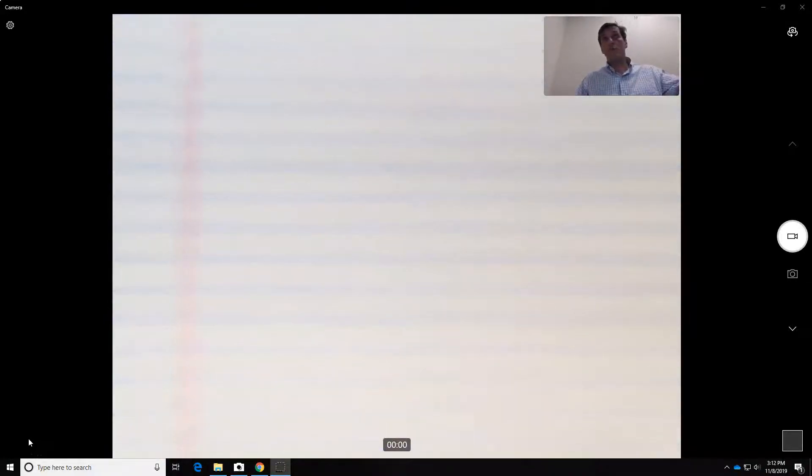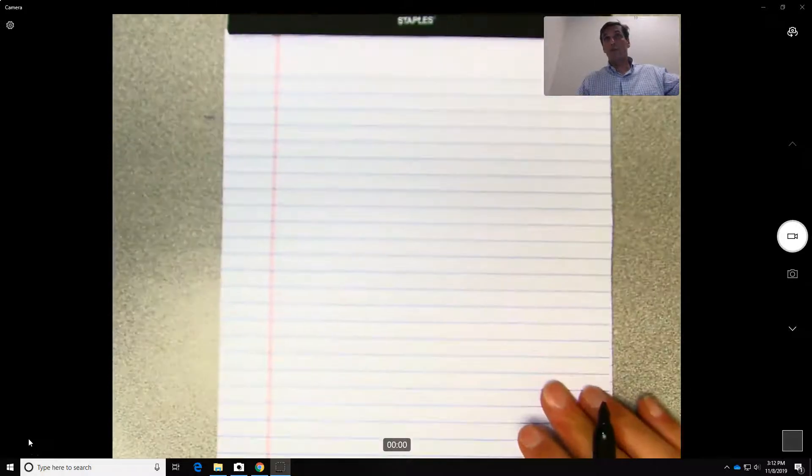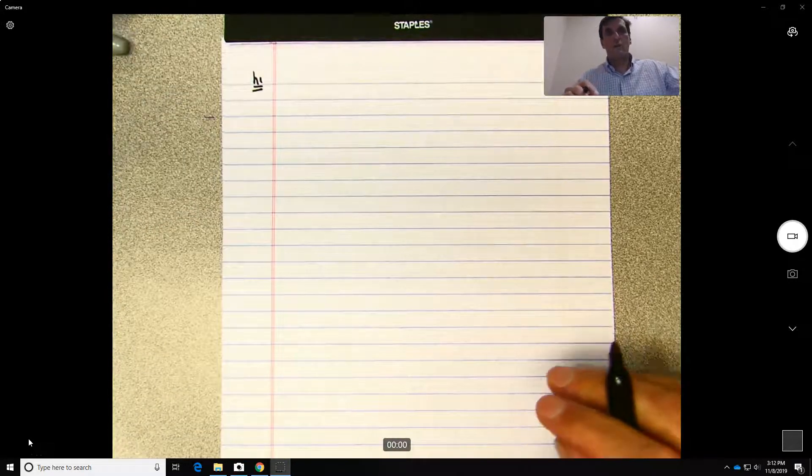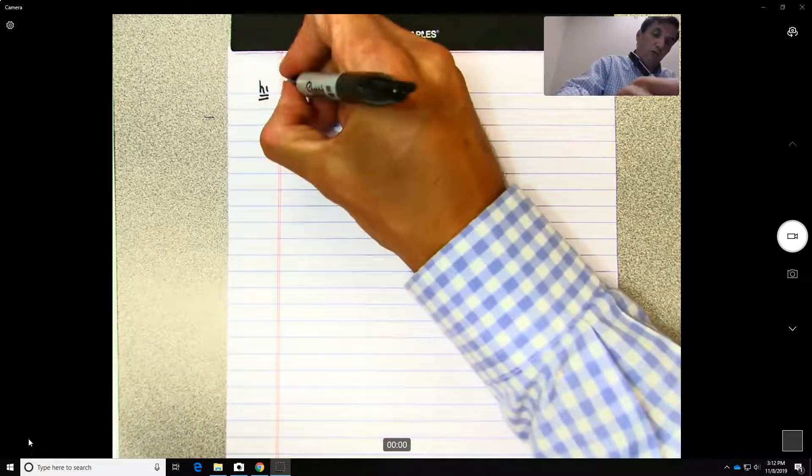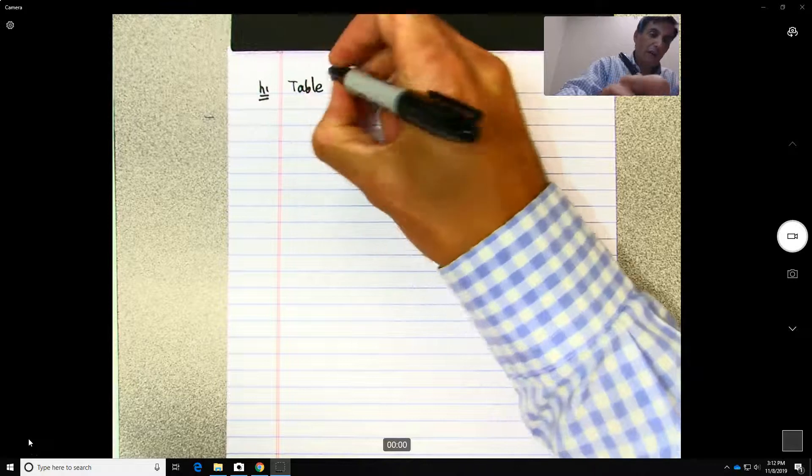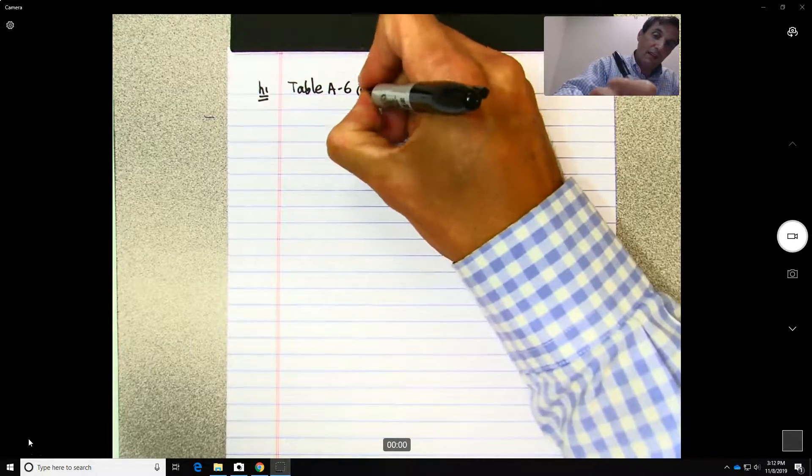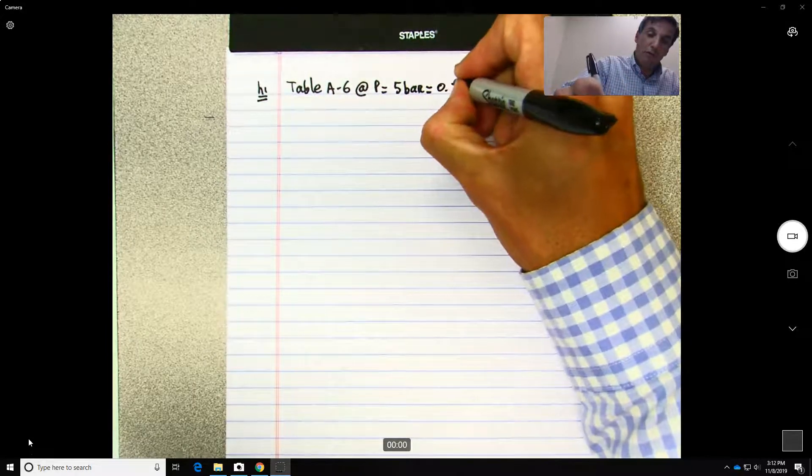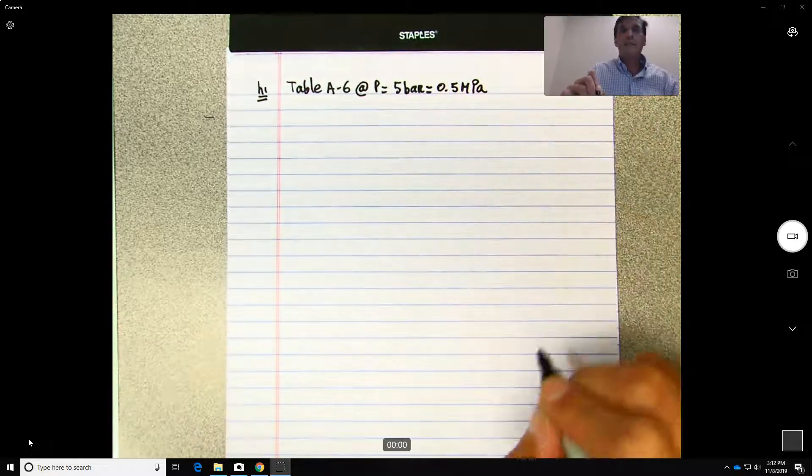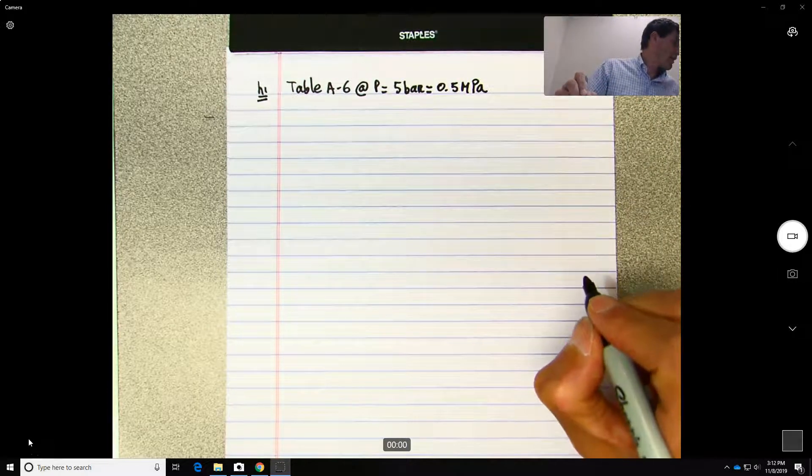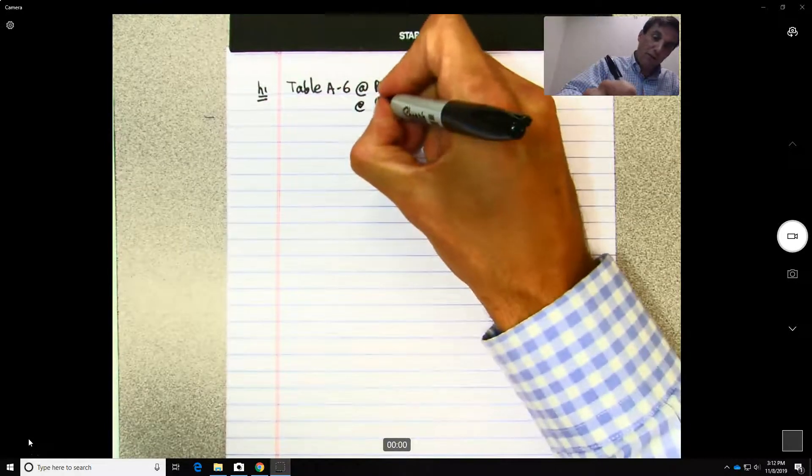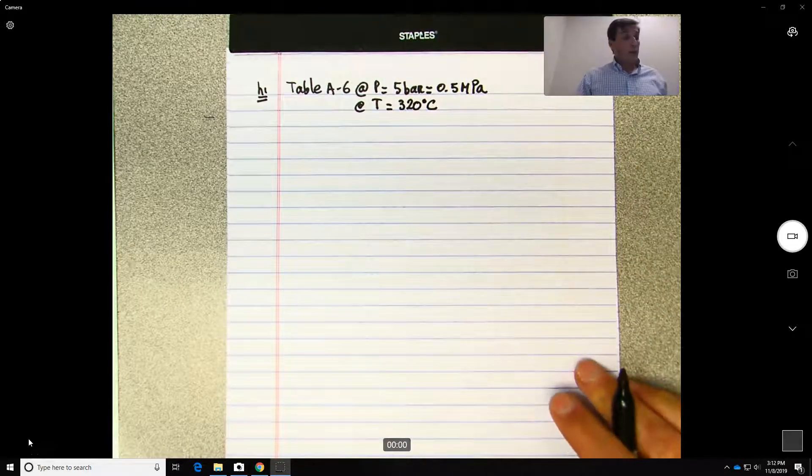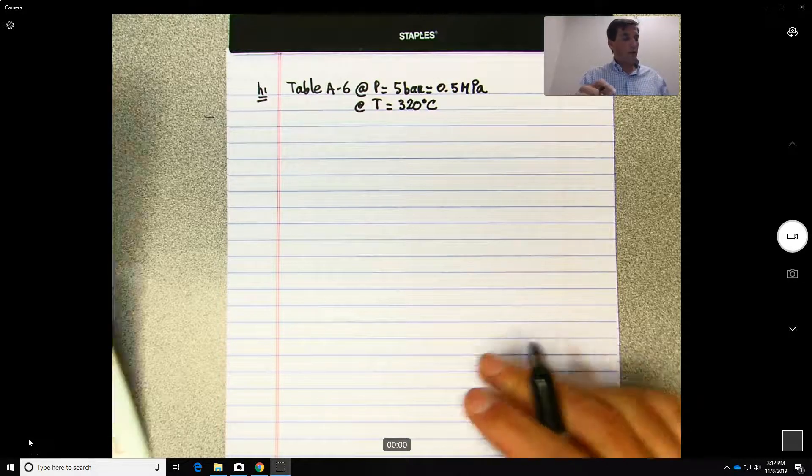So first thing to do is to find h1. In order to find h1, we know it's 5 bars, so you go to table h6 at P equals 5 bars, which is the same as 0.5 megapascals, and we also know the temperature, so at T equals 320 degrees Celsius.